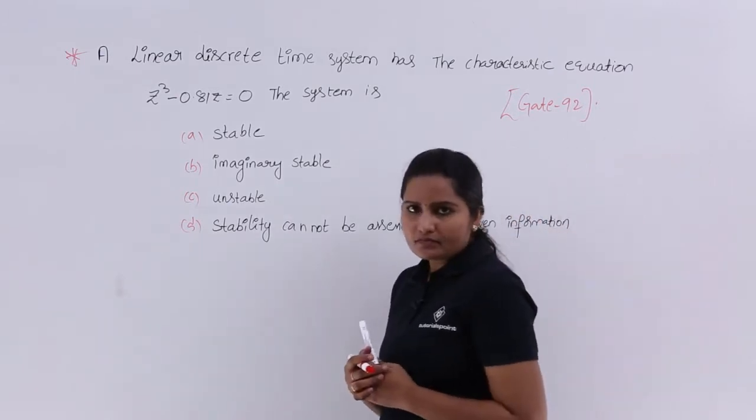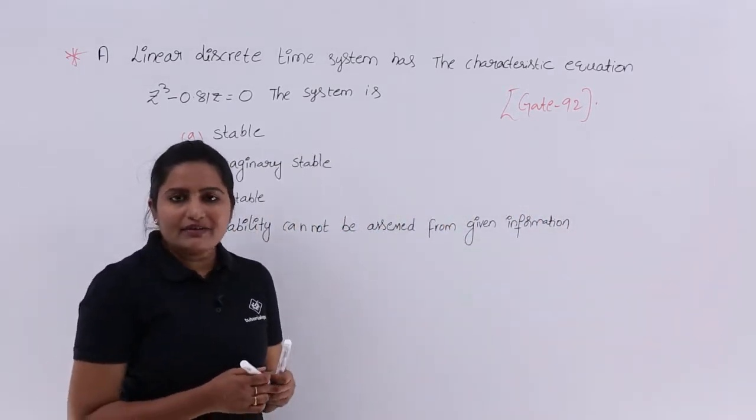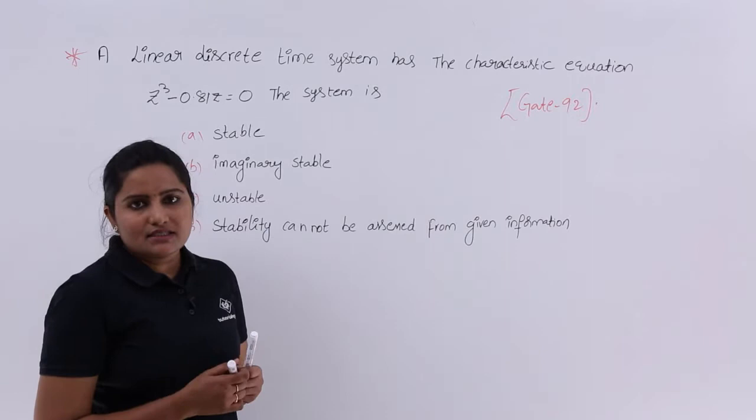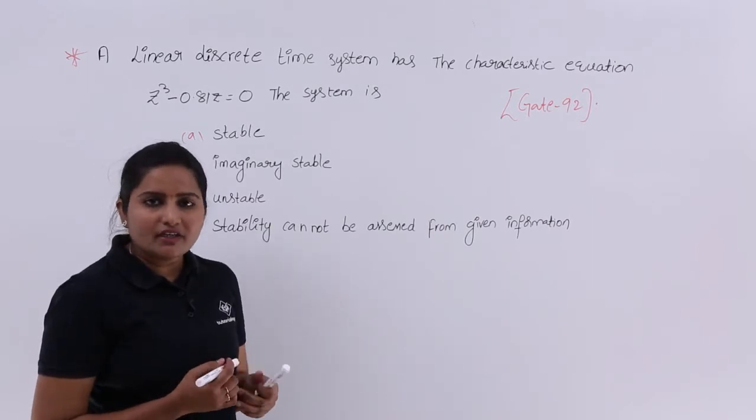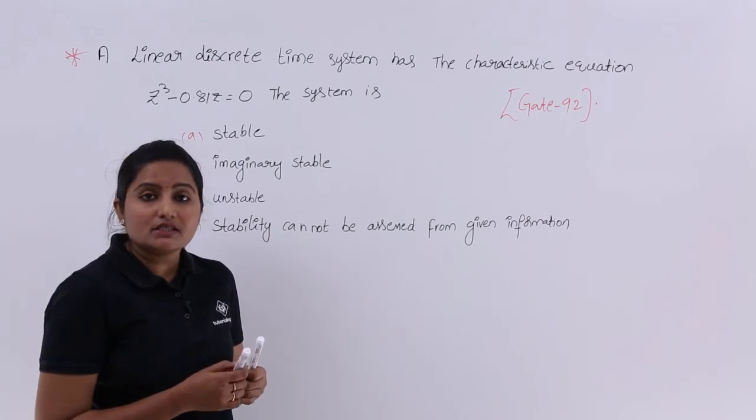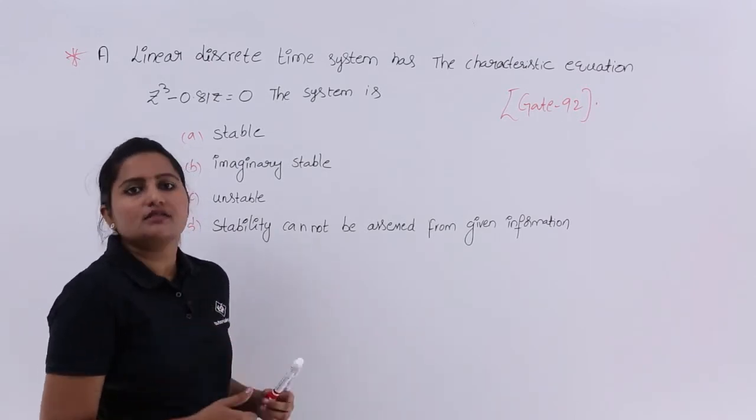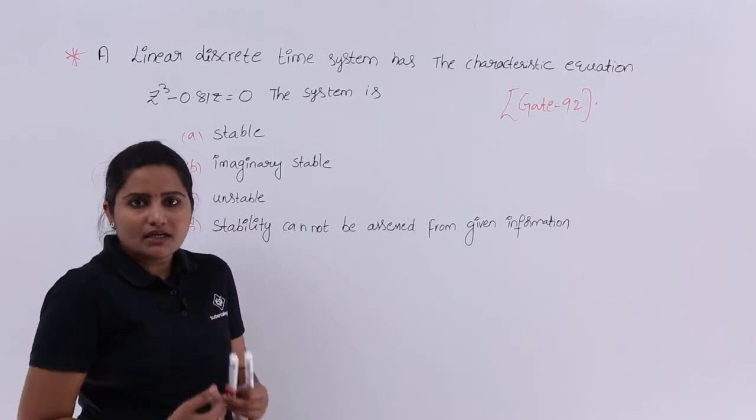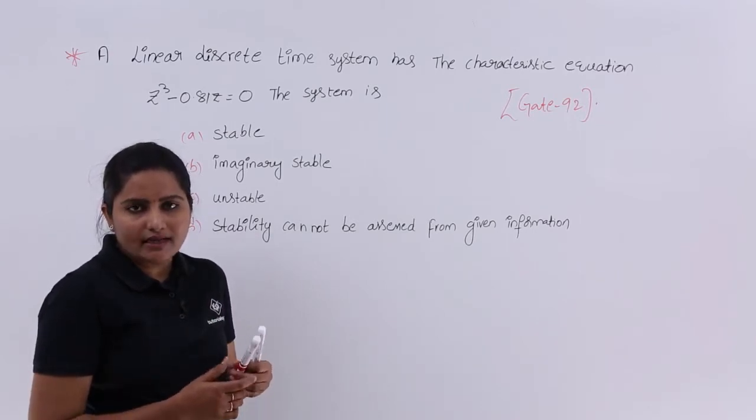Here we are given the characteristic equation of the system. They did not give any transfer function of the system or anything. That means to get the ROC, we need some transfer function of the system, a rational transfer function of the system.